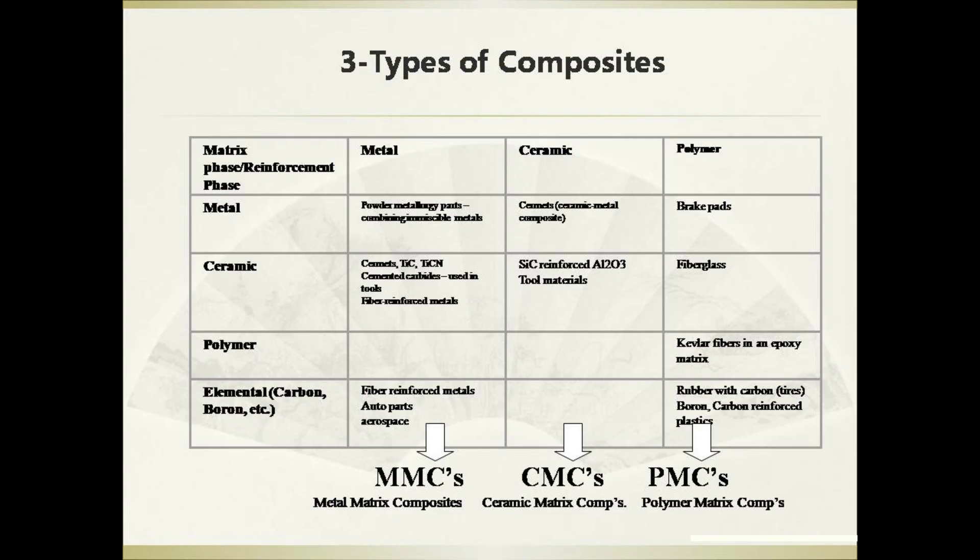Composite materials can be divided into three categories: metal matrix composites, ceramic matrix composites, and polymer matrix composites. This chart demonstrates the commonly used matrix and reinforcement phases in the metal, ceramic, and polymer matrix composites.